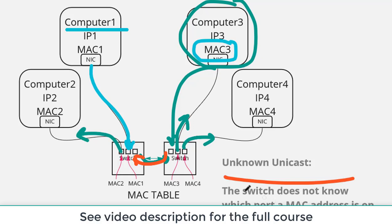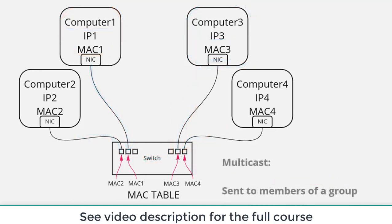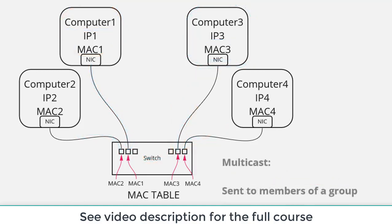That's how a switch discovers which computers are connected to which port. The unknown unicast essentially results in a broadcast-like behavior — one source, but the resulting traffic is delivered out many ports. What all these different types of BUM traffic have in common is that they are multi-destination: a frame is generated and delivered to multiple destinations.